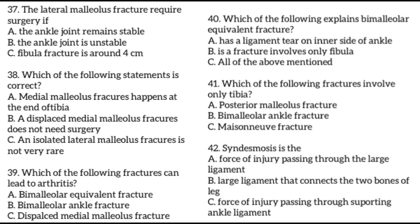Medial malleolus fractures involve only the tibia. This fracture occurs to the bone on the end of the tibia, called the medial malleolus. An isolated medial malleolus fracture is very rare compared with an isolated lateral malleolus fracture. Generally, a displaced medial malleolus fracture is treated with surgery. Bimalleolar ankle fractures involve both fibula and tibia, occurring when there is an injury to both the inner and outer side of the ankle, always resulting in an unstable ankle joint, and surgery is recommended for most patients with this kind of fracture.